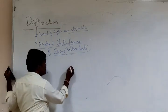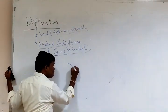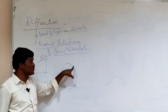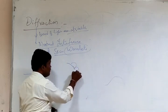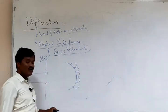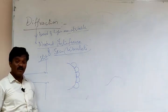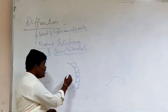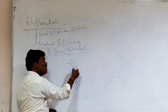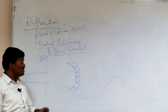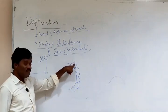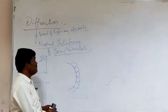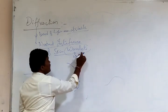This is what Huygens' principle says: every point on the wavefront is acting as a source of secondary wavelets. For any wavefront, you take a number of points, and each acts as a source of secondary wavelets. The wavefront is nothing but the envelope of the secondary wavelets — the next wavefront forms due to the envelope of the secondary wavelets.